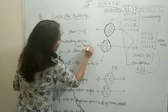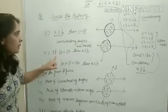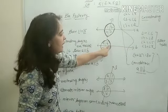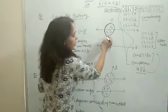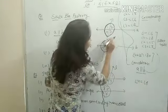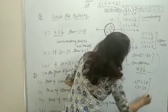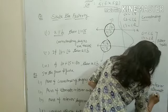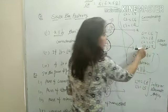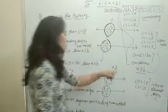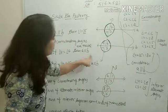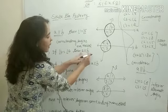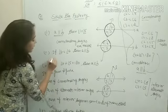दूसरे में given है: angle 4 is equal to angle 6. यह interior alternate angles हैं — interior alternate angles भी equal होते हैं। Angle 4 equal to 6, angle 3 equal to 5 — interior alternate angles। इसने उल्टा पूछा है: angle 4 equal to angle 6, then A parallel to B. यह कौन सी property है? Interior alternate angles equal हैं।